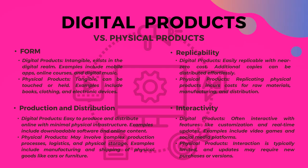In the aspect of form, digital products are intangible and exist in the digital realm — examples include mobile apps, online courses, and digital music. Physical products are tangible and can be touched or held — examples include books, clothing, and electronic devices. In production and distribution, digital products are easy to produce and distribute online with minimal physical infrastructure, such as downloadable software and online content. Physical products may involve complex production processes, logistics, and physical storage — for example, manufacturing and shipping of goods like cars or furniture.